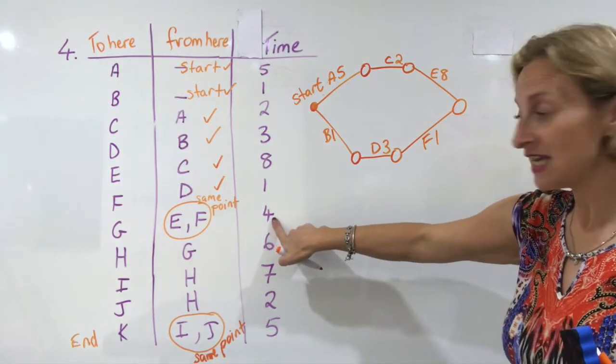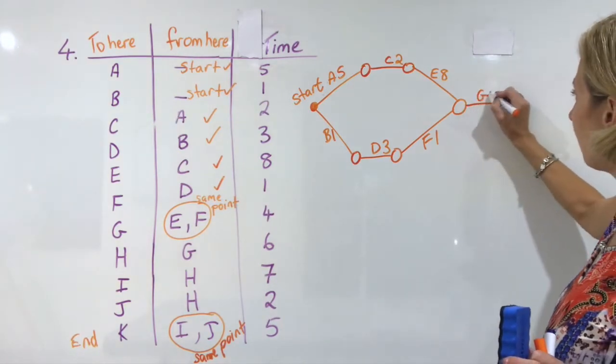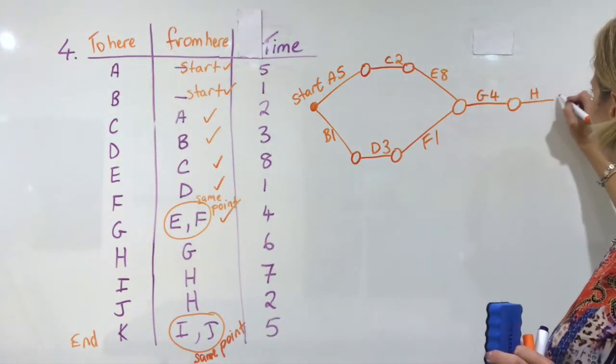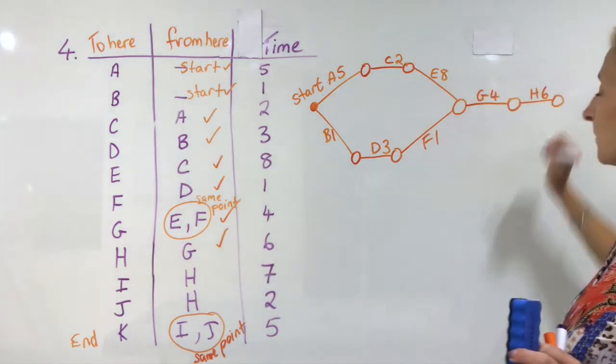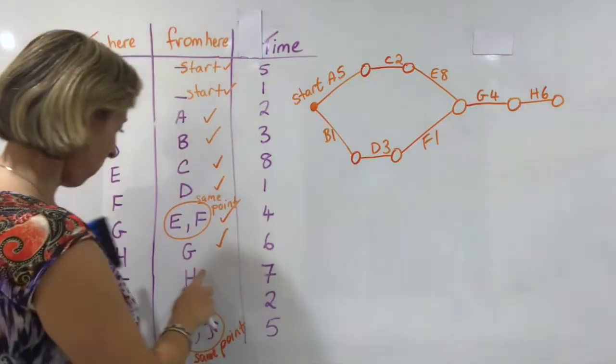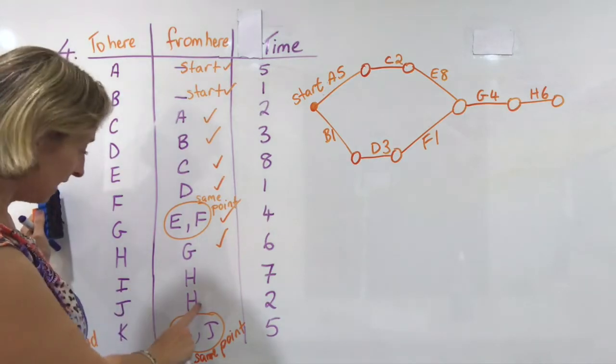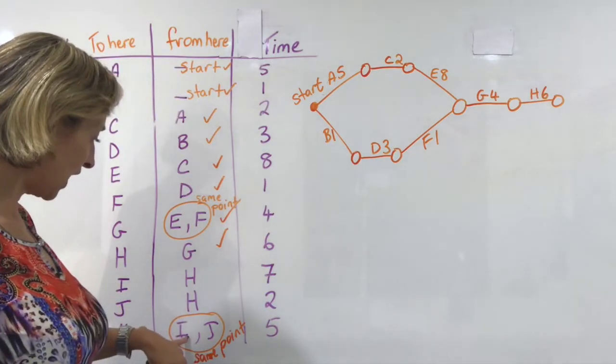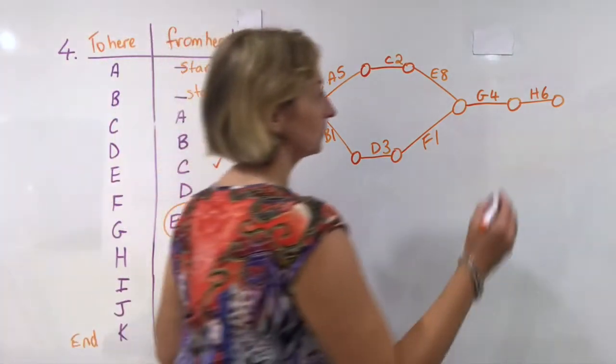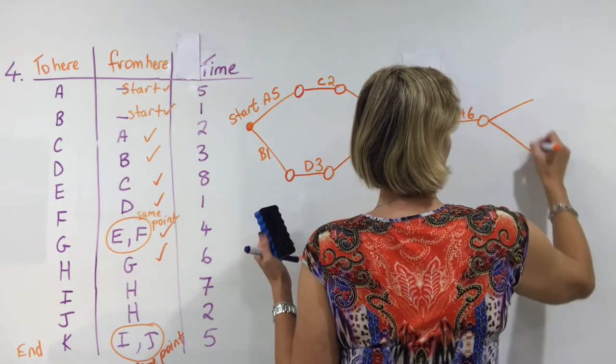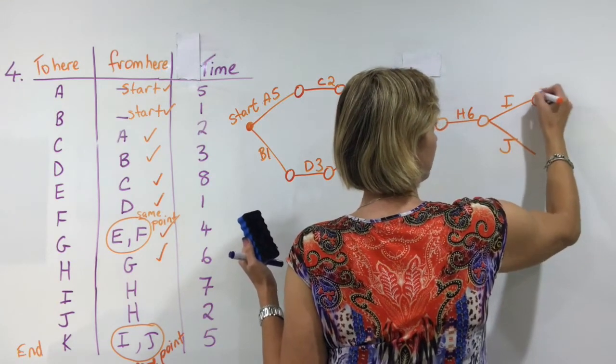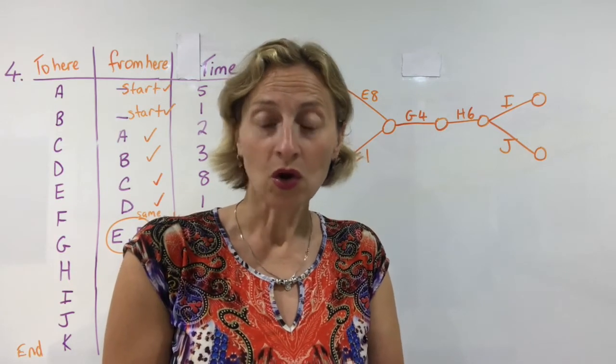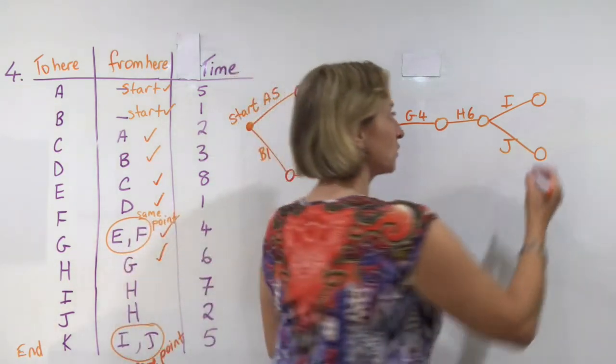Now from that point E and F, which I've got now is here, I can go to G. And that should take 4. Then from G to H, and that should have taken 6. Then what do I have? I have H to I and H to J. So H has to go to I and J. But I and J have to be the same point. Now that's a bit strange, isn't it? Because how can I have I and J being two separate activities, but they have to go to the same point? Well, that's impossible, isn't it? And that's where I need to put in what's called a dummy.